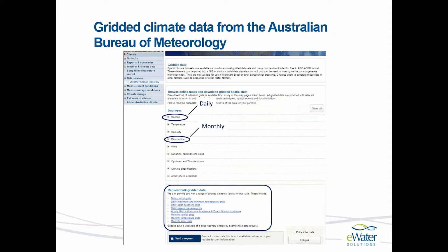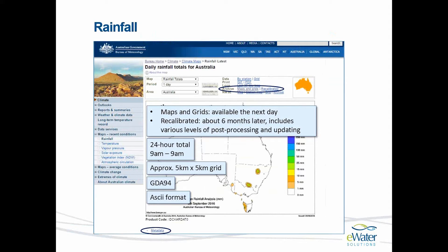The Bureau can provide a bulk service if you request it, which makes it a lot easier than downloading, for instance, 10 years of daily data one by one. Rainfall in Australia is measured from 9am to 9am and totaled as a 24-hour total. It is interpolated into a 5km by 5km grid, made available in GDA94 Geographic Coordinate Reference System and in an ASCII format. The Bureau of Meteorology's website also has a lot of metadata tags which give you background information on any processing done to the data sets.